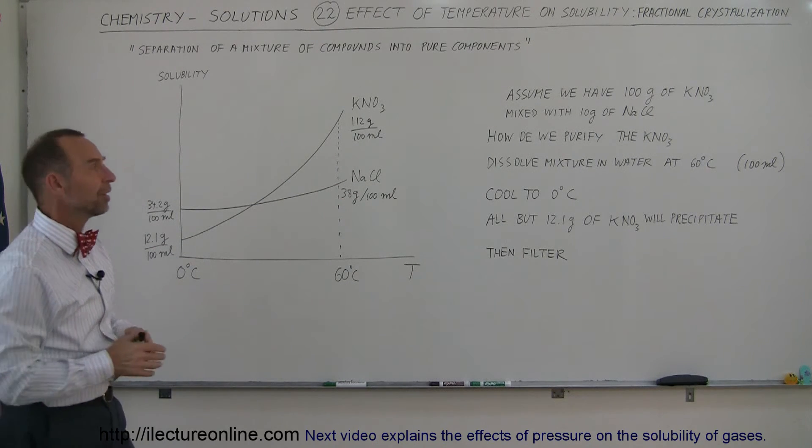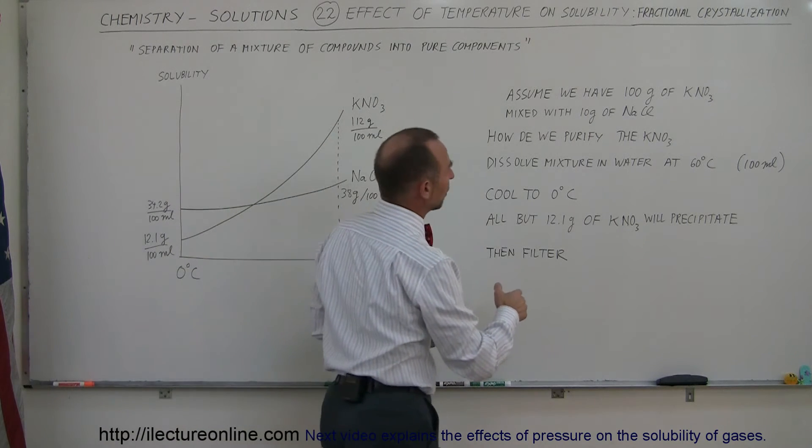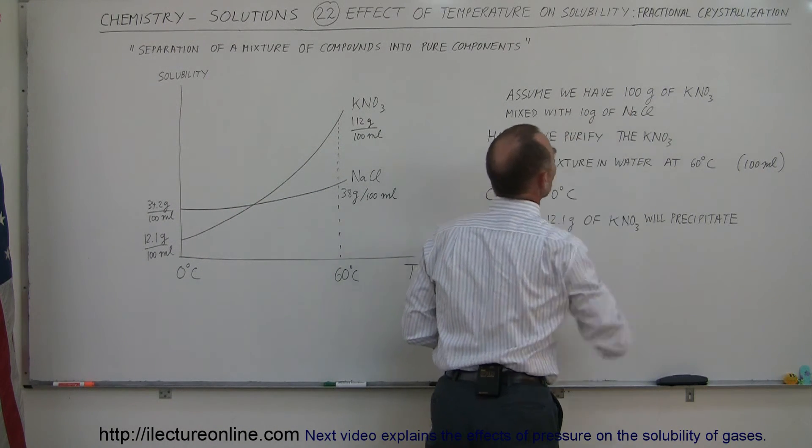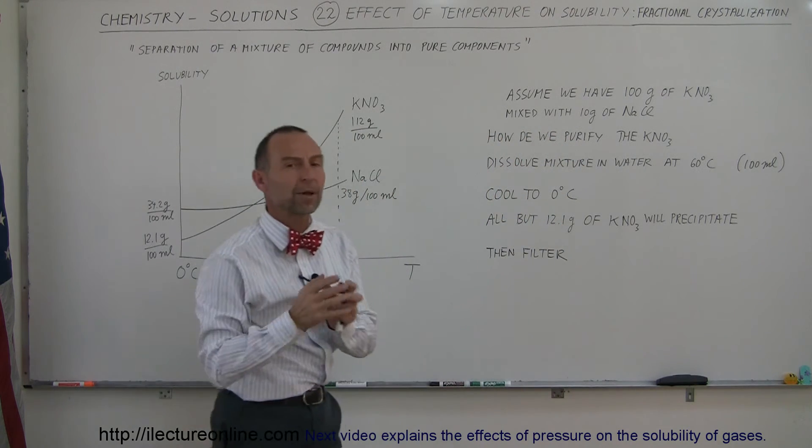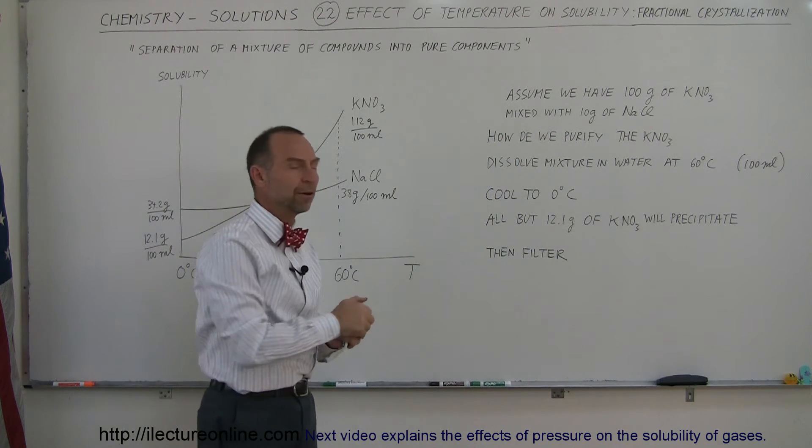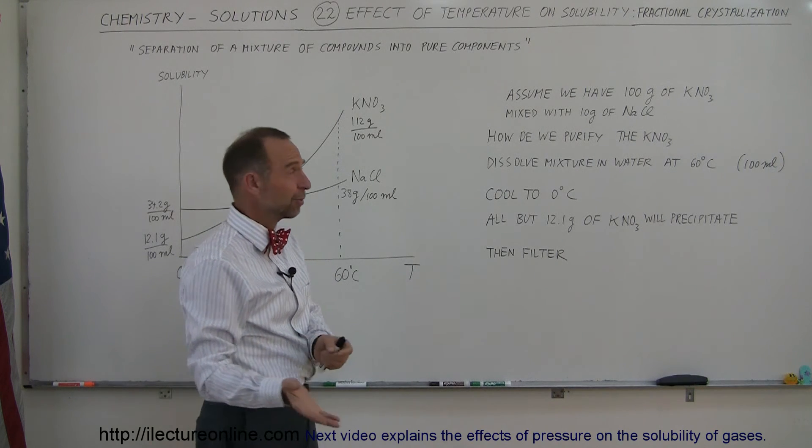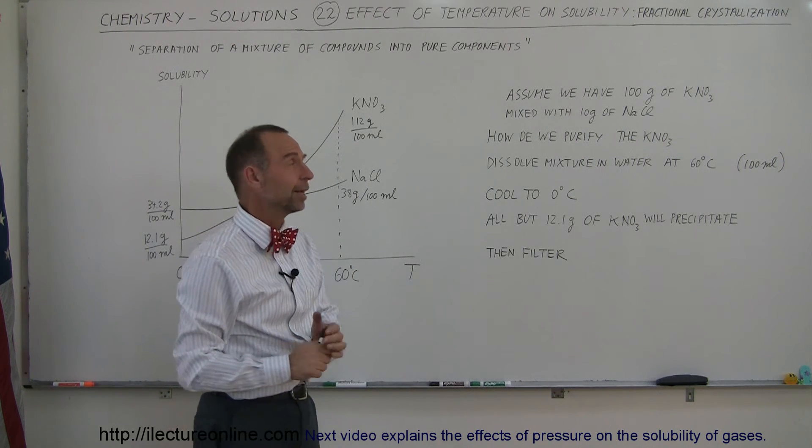Now what happens if we have a mixture? Let's say we have 100 grams of potassium nitrate mixed with 10 grams of sodium chloride, and somehow we want to separate the sodium chloride from the potassium nitrate, or better yet, we want to separate the potassium nitrate from the sodium chloride. We don't want sodium chloride in there. How do we do that?